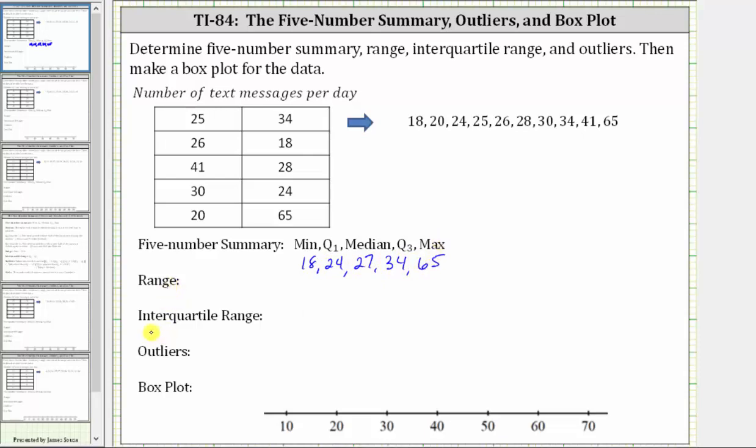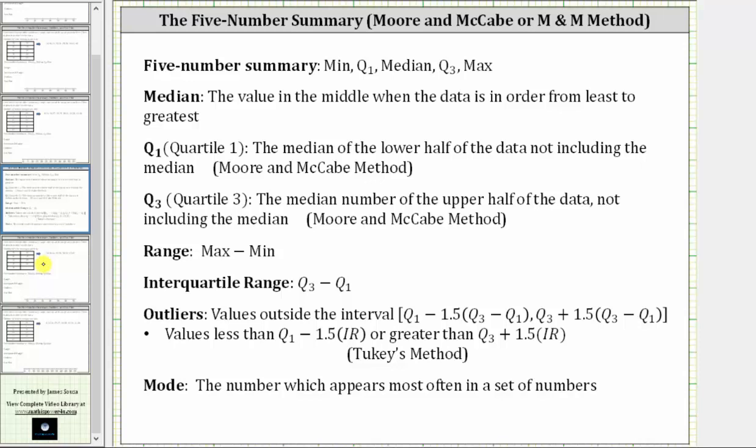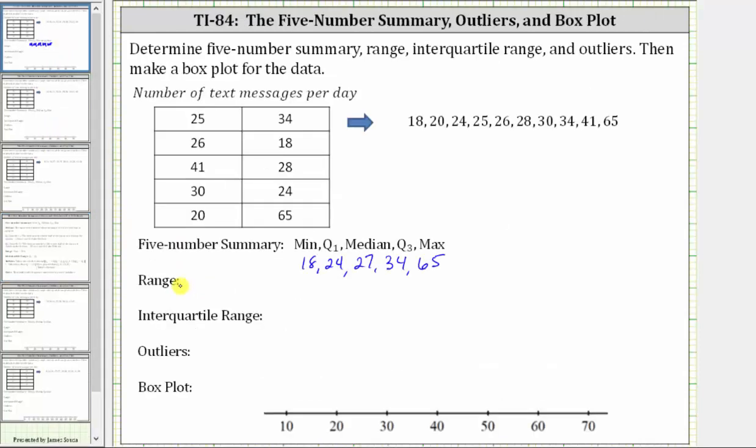Next, we're asked to find the range and the interquartile range, where the range is the maximum minus the minimum, and the interquartile range is Q3 minus Q1. The TI-84 will not give us these values. We need to compute them. So the range is the maximum minus the minimum, which is 65 minus 18, which is 47. The interquartile range is Q3 minus Q1, which is 34 minus 24, which equals 10.